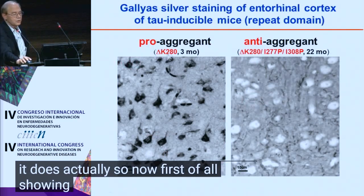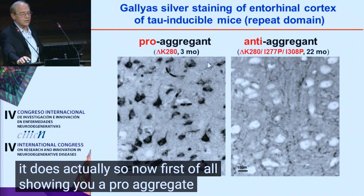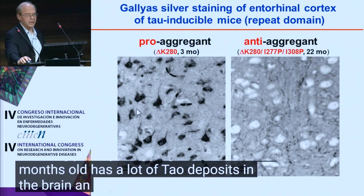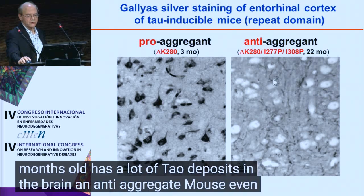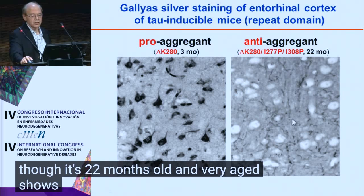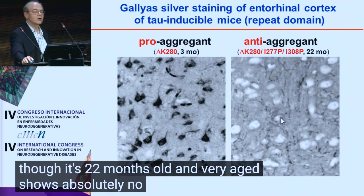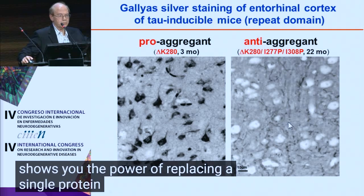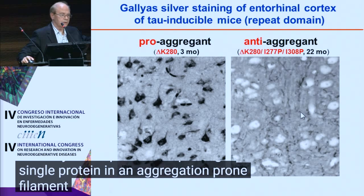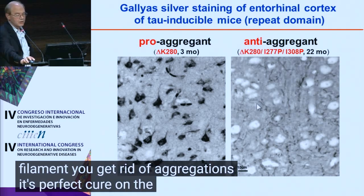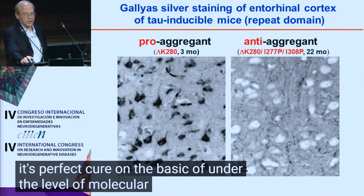I'm showing you a pro-aggregant mouse, three months old, that has a lot of tau deposits in the brain. An anti-aggregant mouse, even though it's 22 months old and very aged, shows absolutely no aggregation. This demonstrates the power of inserting a single proline in an aggregation-prone filament — you get rid of aggregation. So it's a perfect cure on the level of molecular biology, at least.